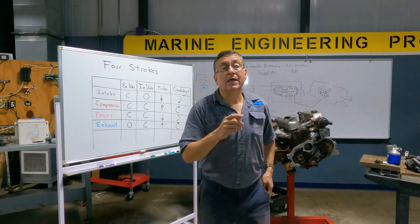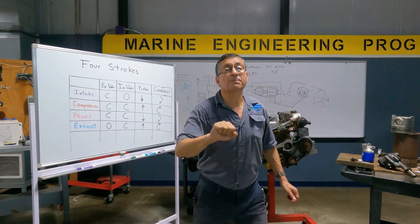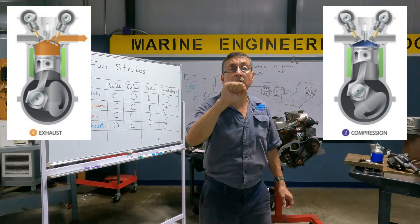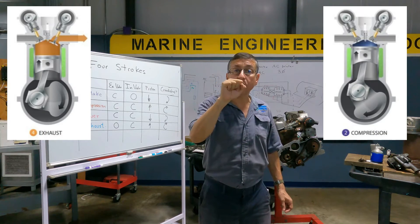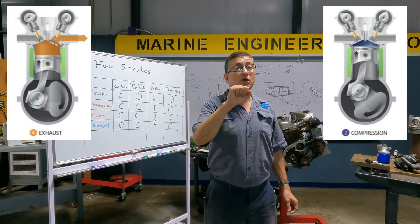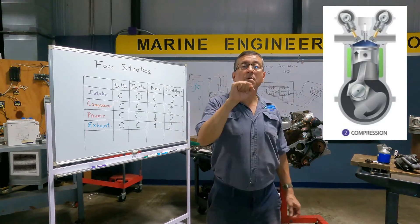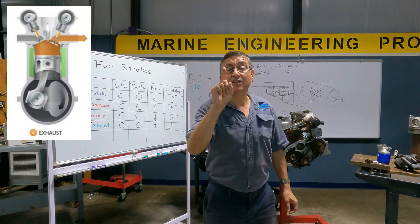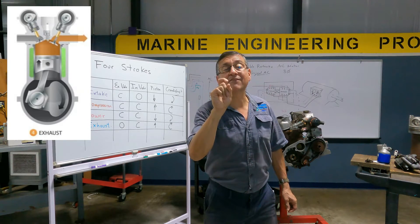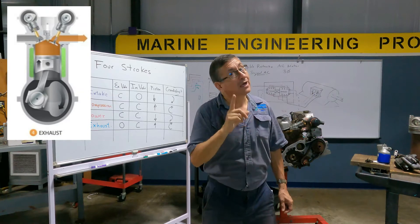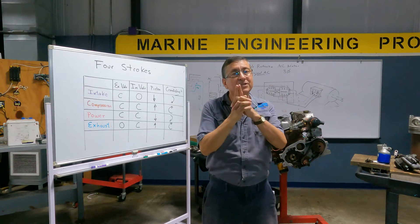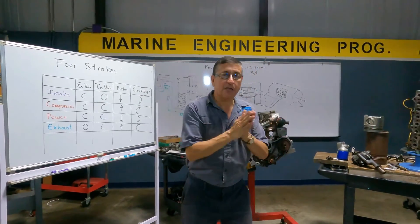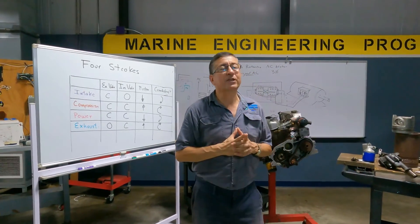It is very important to understand what happens with the valves when the piston is at top dead center. The piston reaches top dead center twice: at the end of compression, both valves should be closed; and at the end of exhaust, the exhaust valve is open and the intake valve is closed. Understanding this is very important for other topics to be explained later.